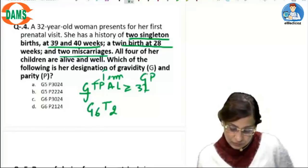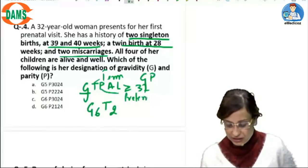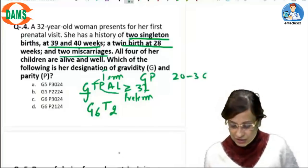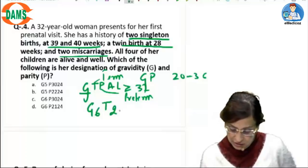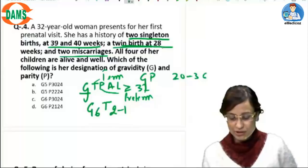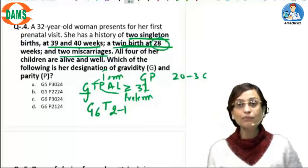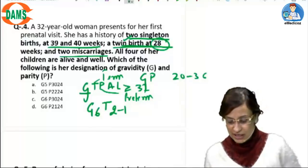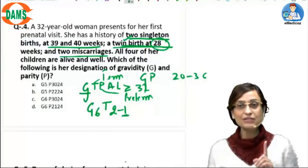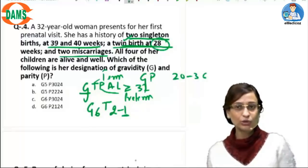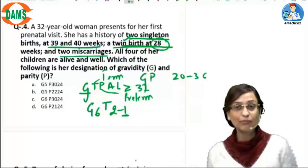Then P here stands for pre-term deliveries. Deliveries between 20 to 36 weeks. So here it is going to be one. Why? Because she's had a twin birth at 28 weeks. So one pre-term birth. Please remember, although the babies were twins, but it was only one pregnancy and therefore it is to be counted as one. So for twins, the T and P are all counted as one. Because it is the number of pregnancies, not the number of babies.